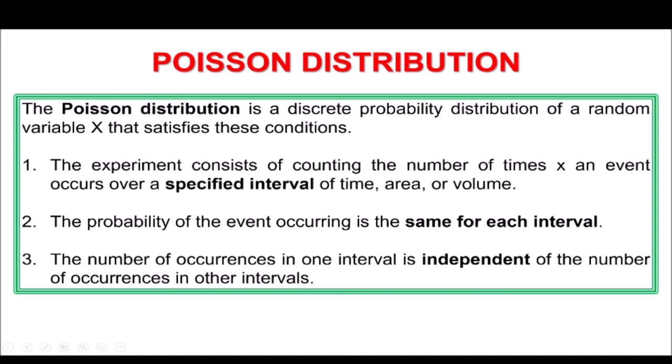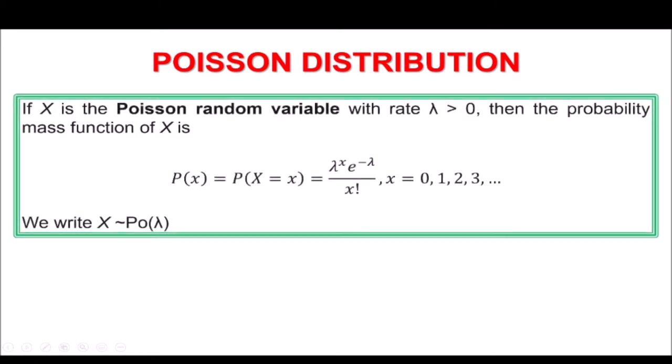If all three criteria are met, we can now apply the Poisson distribution formula. If x is the Poisson random variable with rate lambda greater than 0, then the probability mass function of x is: P(x) = lambda^x times e^(−lambda) all over x factorial. We can write a Poisson distribution using the notation x ~ Po(lambda).